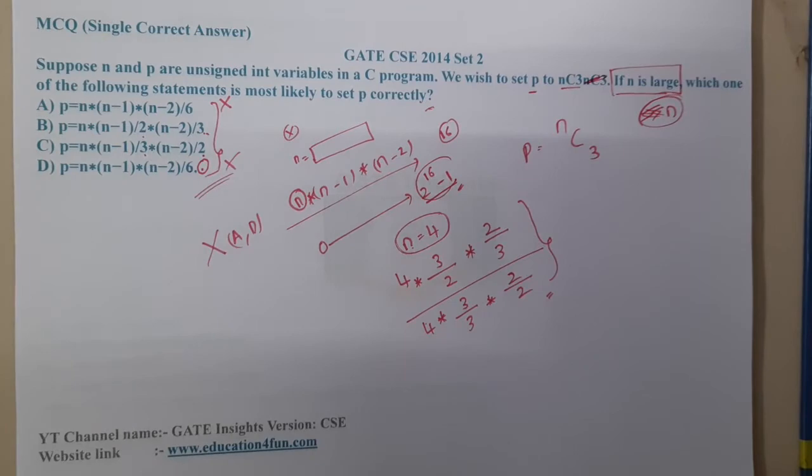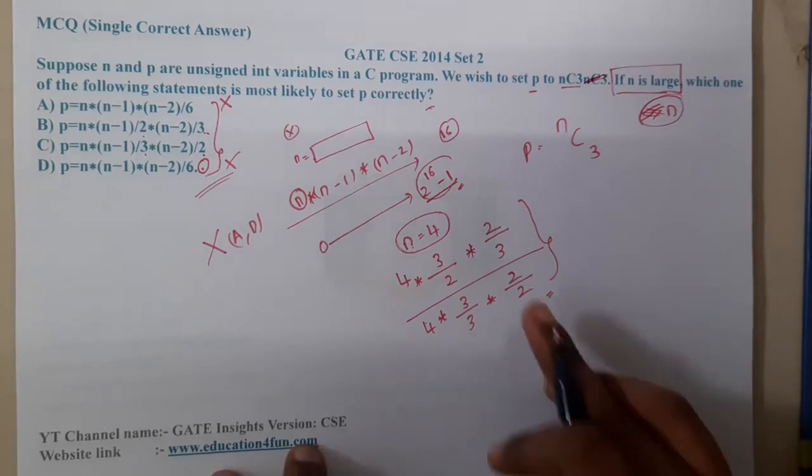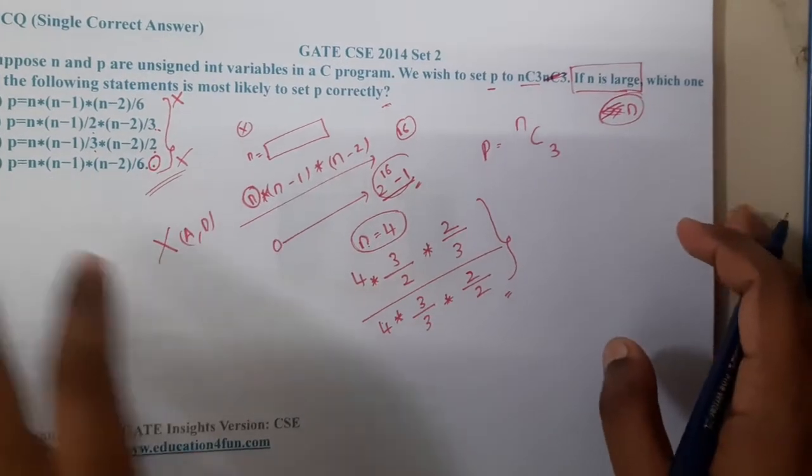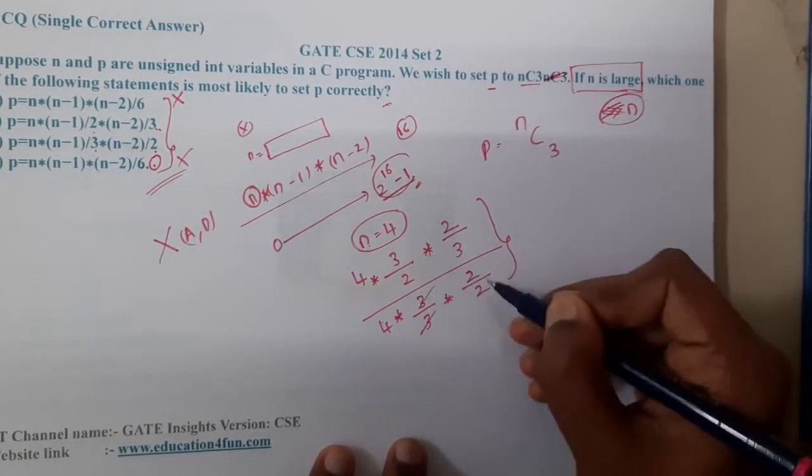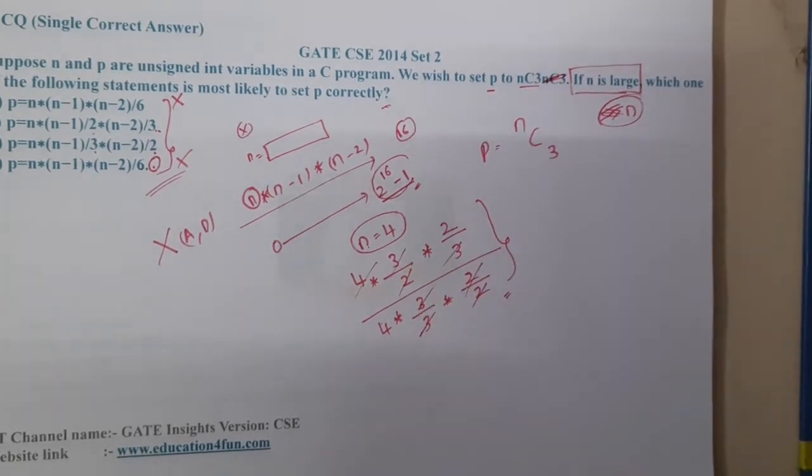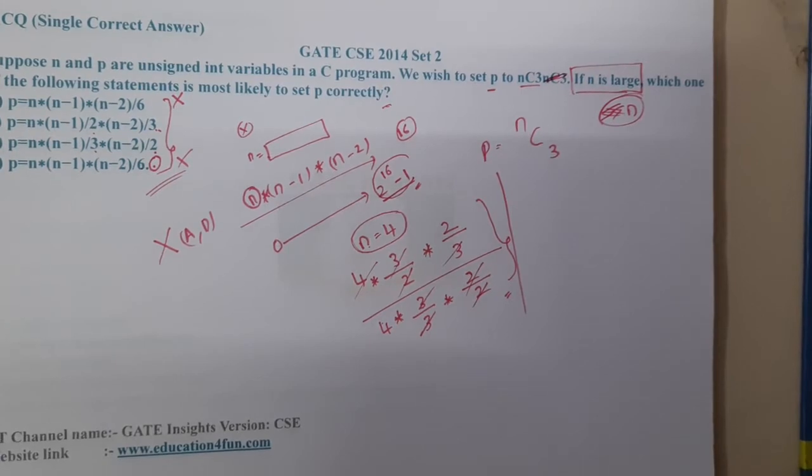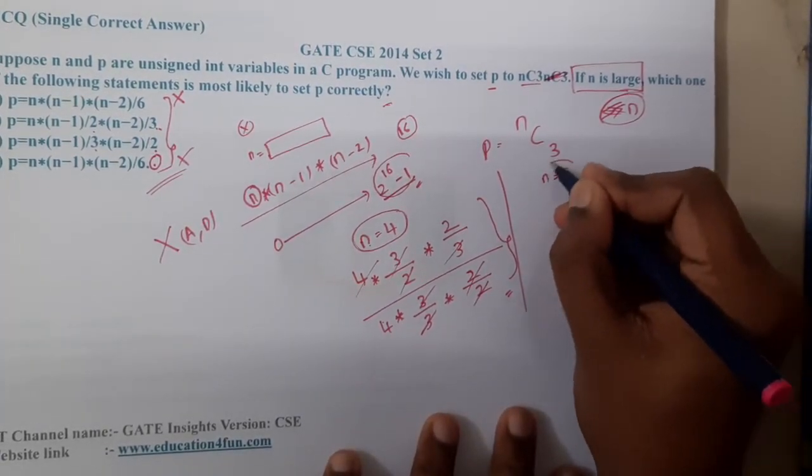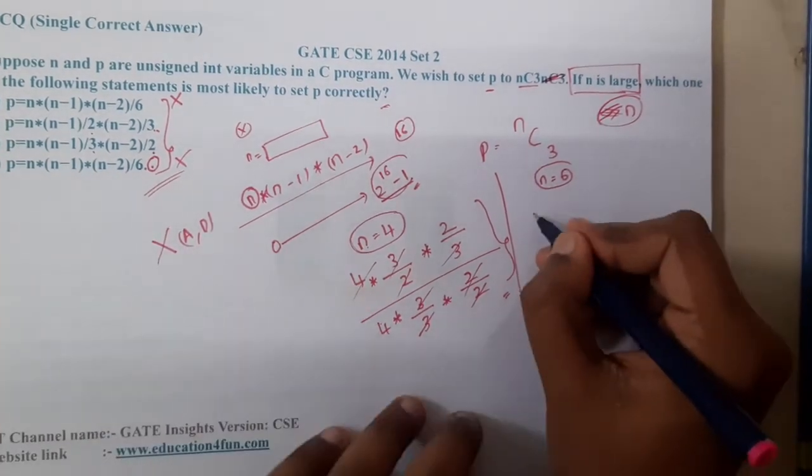With these two, which looks better with respect to calculation? There is a bit confusion because these two numbers are equal and they cancel. Let us take some bigger numbers. Let's take n equals 6.